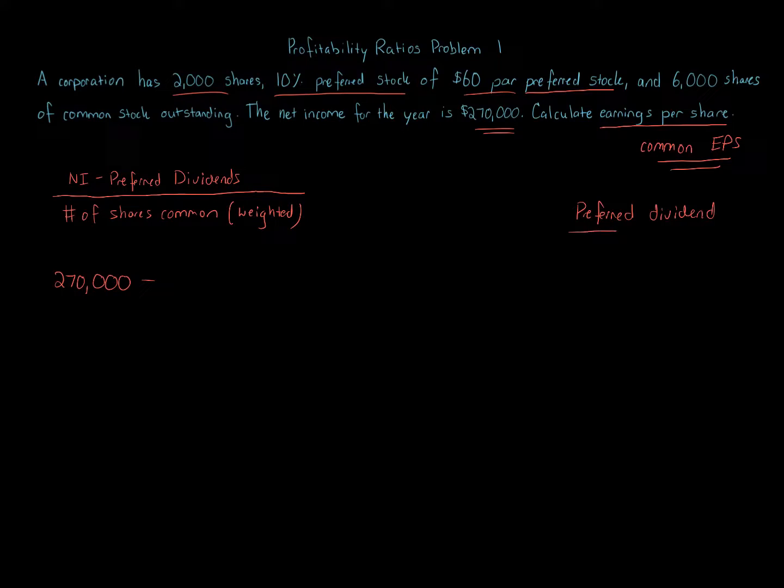What we're going to do is take the 2,000 shares of preferred stock times 10% because it's 10% preferred times $60 par. And when you multiply that out, you're going to get $12,000.